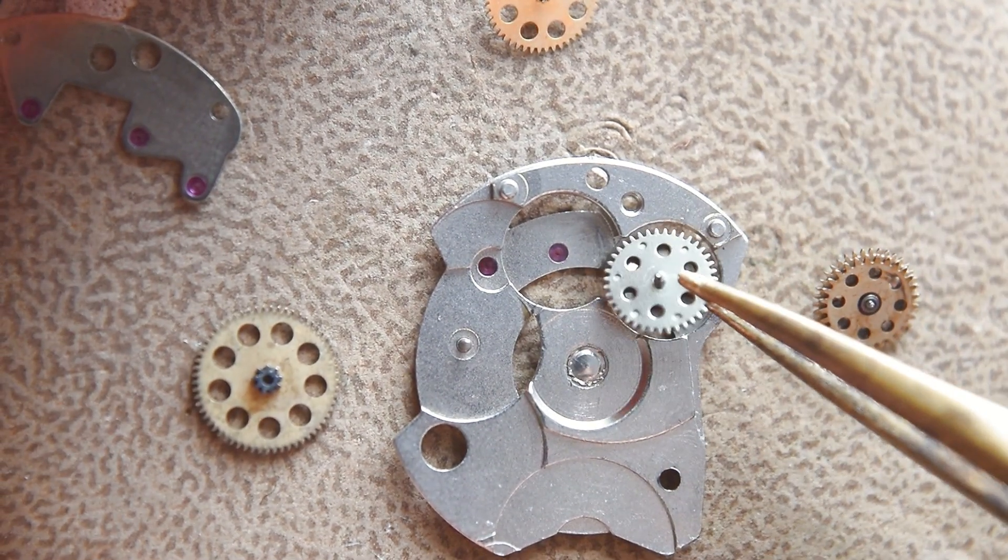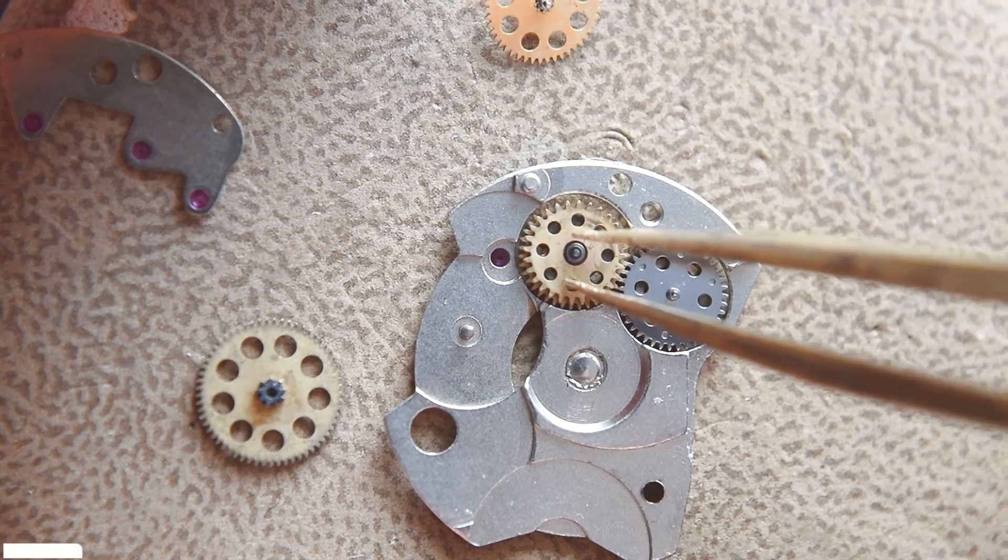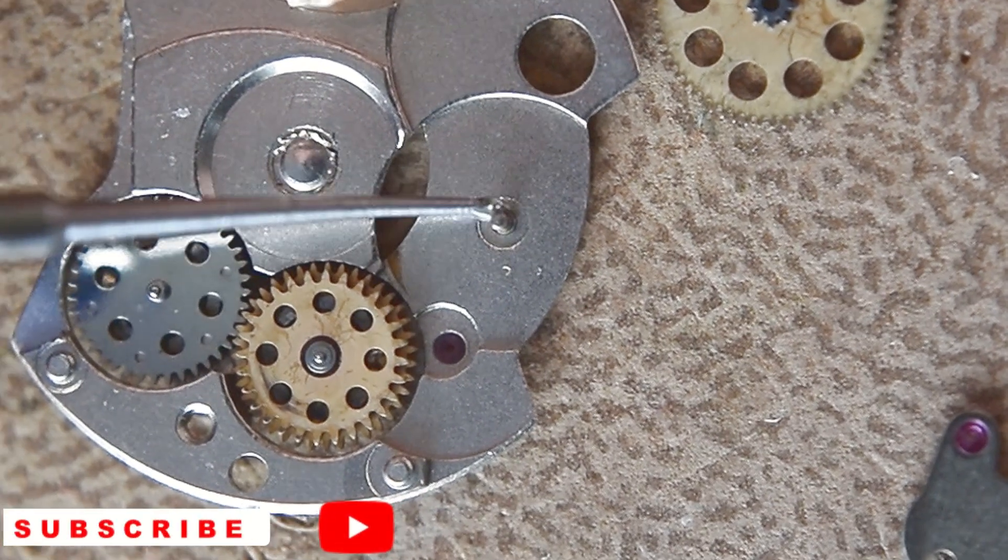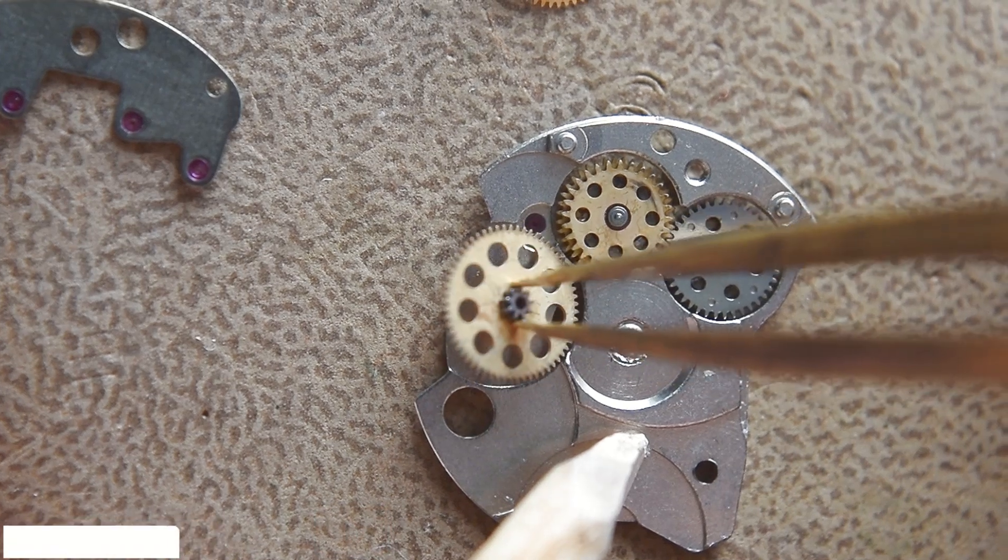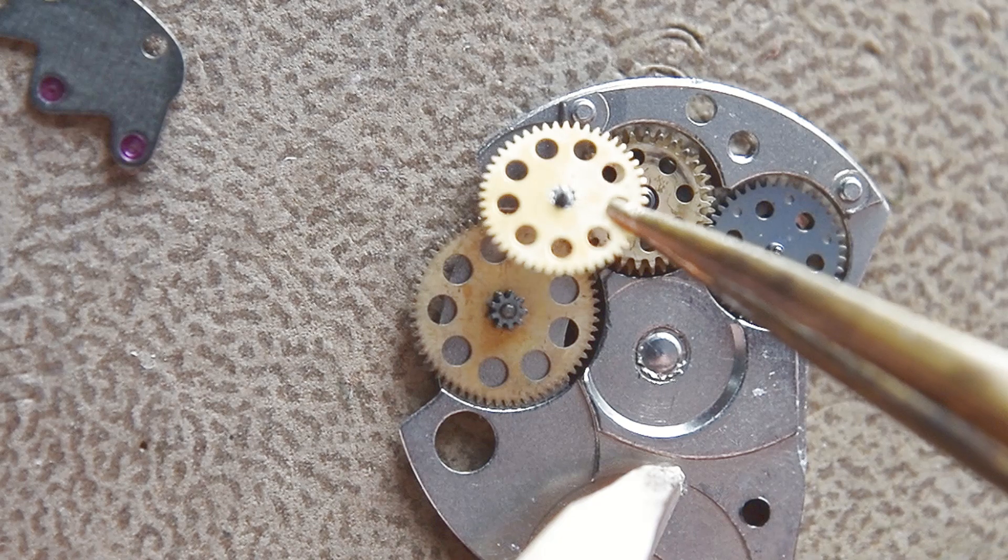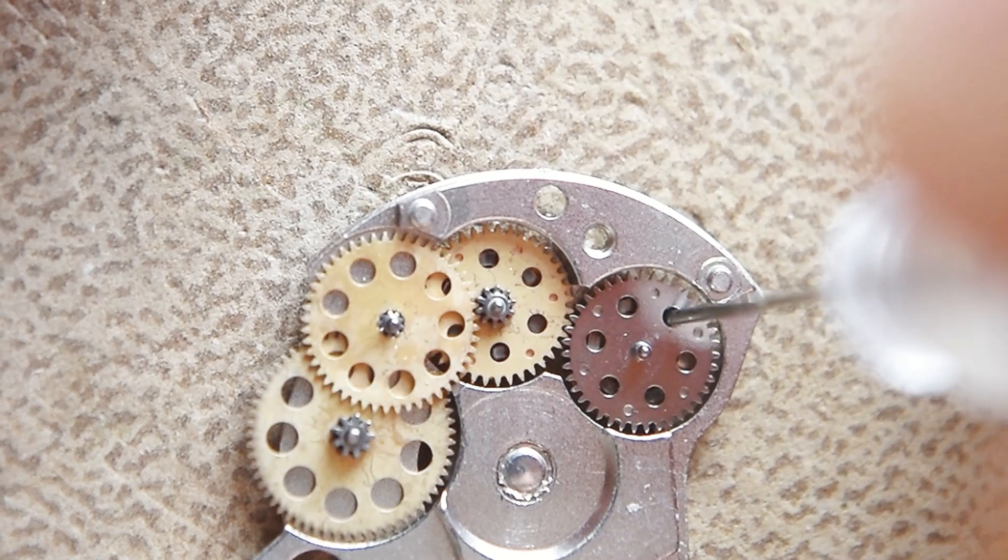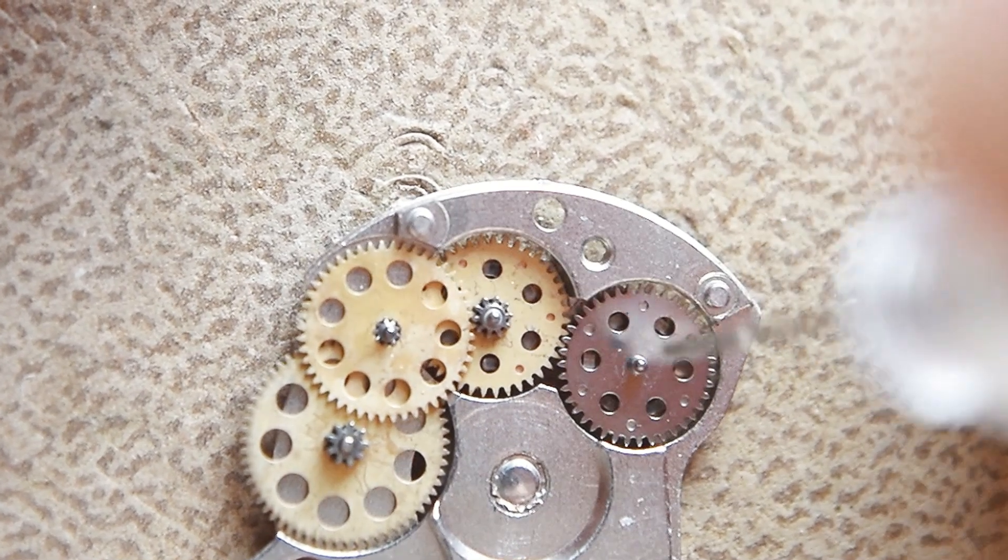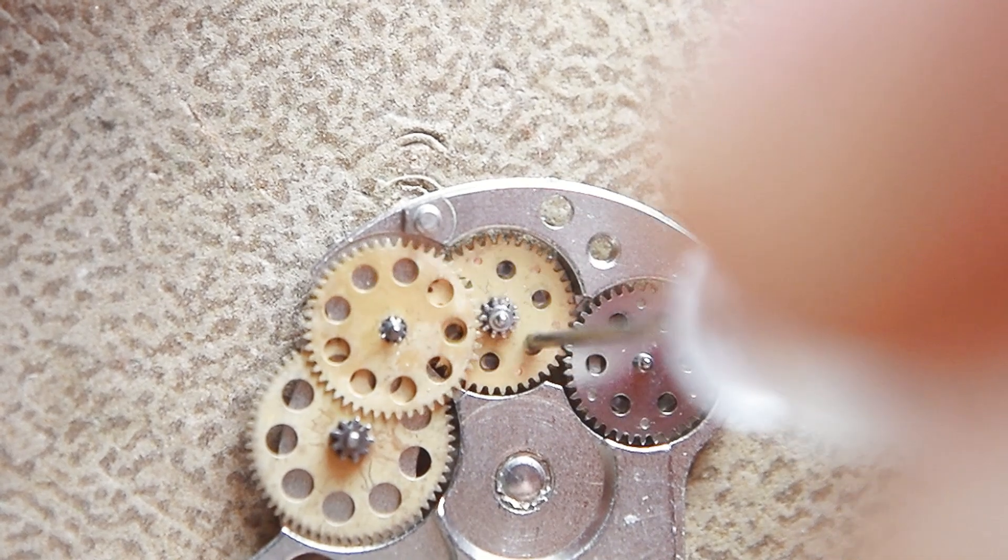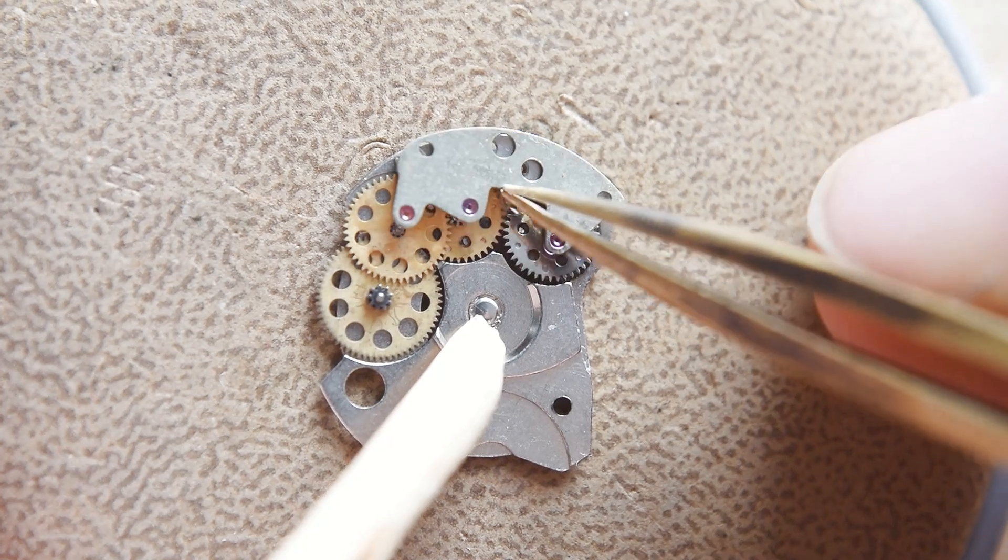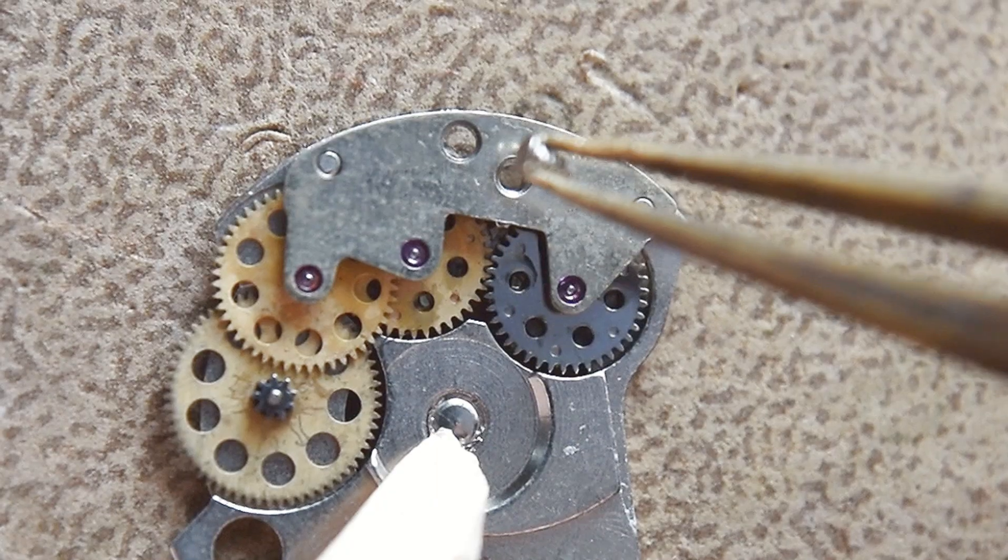Because it is an automatic movement, we have here the automatic motion or automatic mechanism. Now in short steps I will assemble this part of this mechanical movement. Few wheels here, not very complicated.